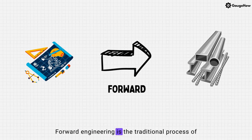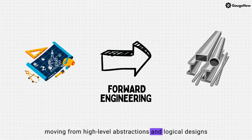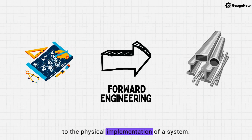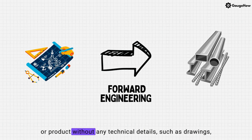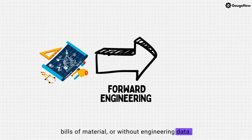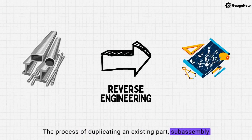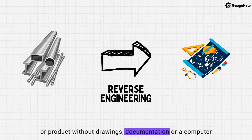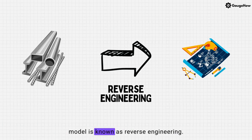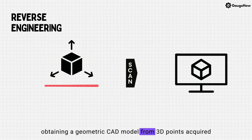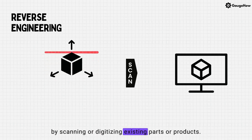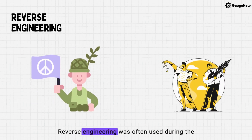Forward engineering is the traditional process of moving from high-level abstractions and logical designs to the physical implementation of a system. In some situations, there may be a physical part or product without any technical details, such as drawings, bills of material, or without engineering data. The process of duplicating an existing part, sub-assembly or product without drawings, documentation or a computer model is known as reverse engineering. Reverse engineering is also defined as the process of obtaining a geometric CAD model from 3D points acquired by scanning or digitizing existing parts or products.